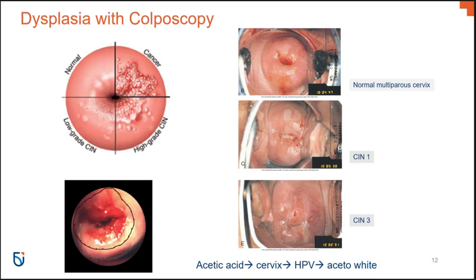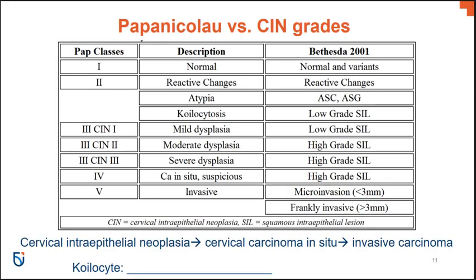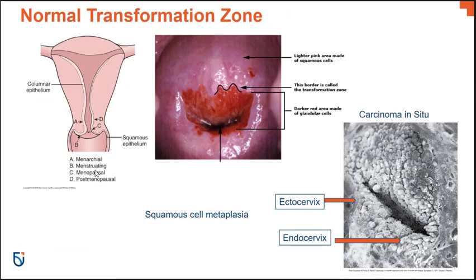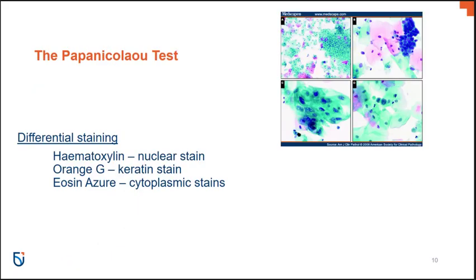As a woman ages, the vulnerable transformation zone actually moves into the cervical canal, so the endocervix needs to be sampled as well. In menopausal and post-menopausal women, the transformation zone's location is higher — within the endocervical canal — compared to a younger female. The zone moves inward with age and then back again, so you have to make sure you're sampling the correct area or at least getting enough tissue for sampling.